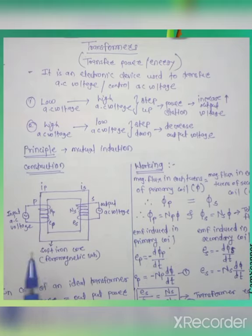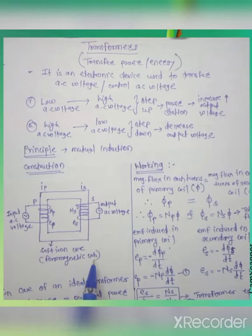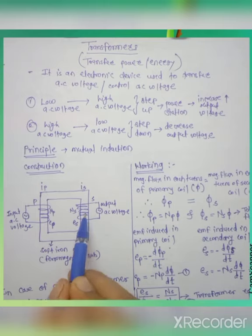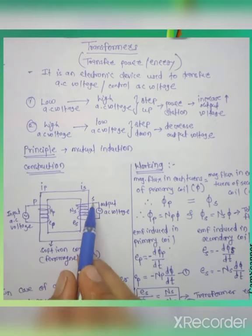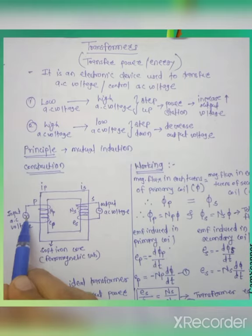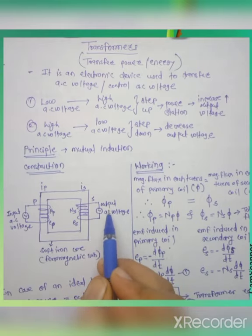Now we see the construction of transformer. This is a soft iron core, which is a ferromagnetic material or ferromagnetic substance that absorbs the whole amount of magnetic field lines. There are two types of winding — primary winding and secondary winding — which are made up of copper wire. Primary winding is called P, secondary winding is called S. Primary winding receives the input AC voltage and secondary winding gives the output AC voltage.